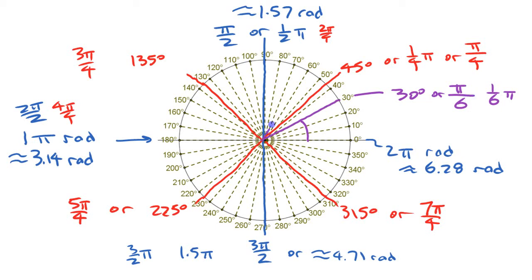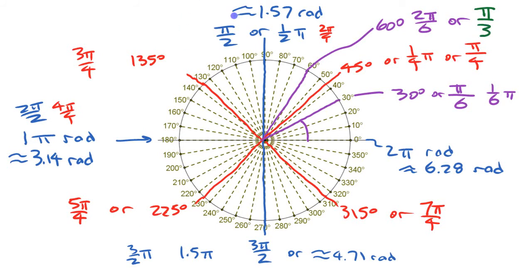30 degrees is pi over six. Then 60 degrees — you could write it as 2 pi over 6, or in lowest terms, pi over 3. Then 90 degrees: following the pattern that's 3 pi over 6, but we already have that in lowest terms as pi over 2. And 120 degrees is 4 pi over 6, or in lowest terms, 2 pi over 3.